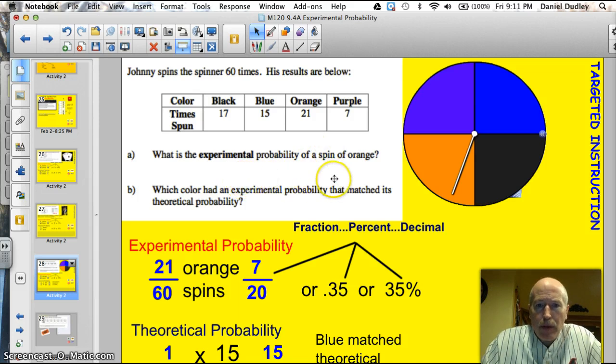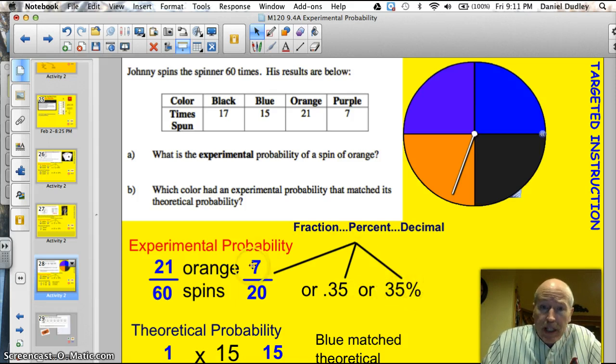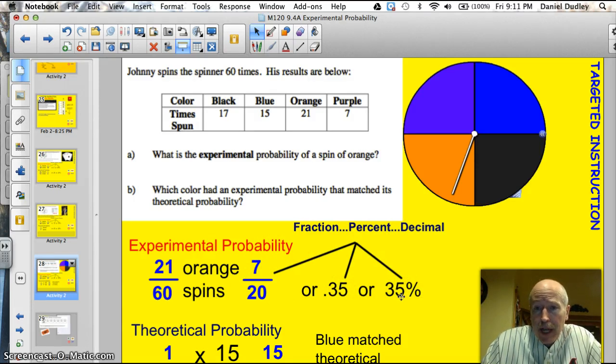What was the experimental probability of spinning orange? All right, well, he had a total of 60 spins. They did that for us, so I didn't have to count. And there were 21 orange. I got my 21. So 21 orange out of 60 spins. If I reduce that down, I divide by 3, I get 7/20. Or, 0.35 is a decimal, or 35%. So I got these three ways of expressing that probability experimentally. I like using the percent, so it's a 35% of the time he spun orange.